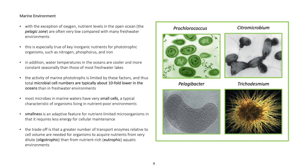In the marine environment, with the exception of oxygen, nutrient levels in the open ocean — the pelagic zone — are often very low compared with many freshwater environments. This is especially true of key inorganic nutrients for phototrophic organisms, such as nitrogen, phosphorus, and iron. In addition, water temperatures in the oceans are cooler and more constant seasonally than those of most freshwater lakes.